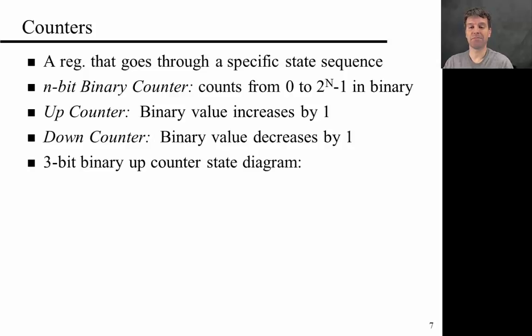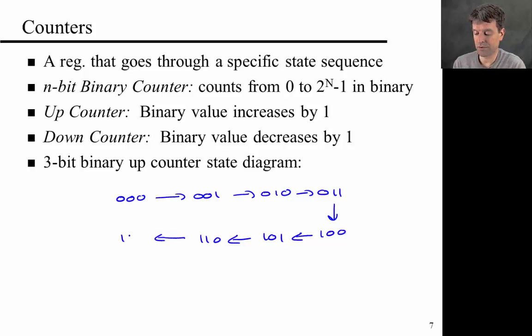So let's start. Let's build such a system. We can essentially start from the state diagram for a 3-bit binary up counter. It looks something like this. The states are, let's just use the state name, 000, 001, 010, 011, 100, 101, 110, 111.